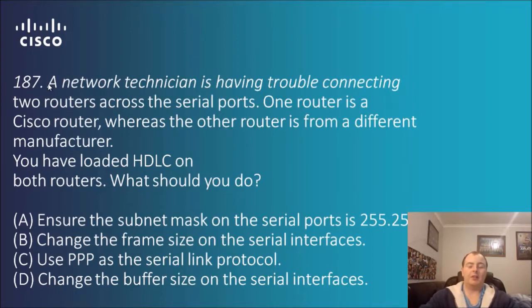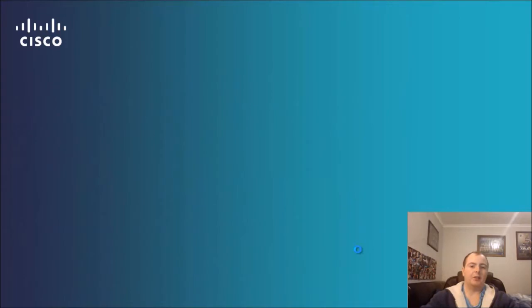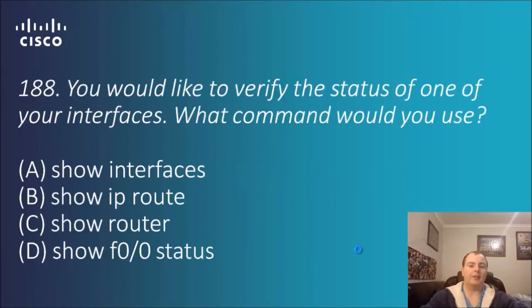Question 187: a network technician is having trouble connecting two routers across serial ports. One router is a Cisco router whereas the other router is from a different manufacturer. You have loaded HDLC on both routers — what should you do? The best way to answer this one is that Cisco traditionally uses HDLC as a proprietary standard between Cisco routers themselves. If other manufacturers are involved, you will need to use PPP as a serial link protocol, and that's the answer for 187.